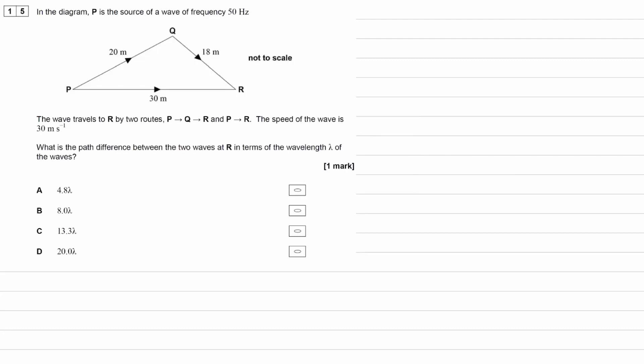In the diagram, P is the source of a wave of frequency 50 hertz. P is the source with a frequency of 50 hertz. We're told that the wave travels to R, going from P to R taking two different routes: P to Q to R, and then P to R. The speed of the waves is 30 meters per second, and we want to work out the path difference between those two waves in terms of wavelength.